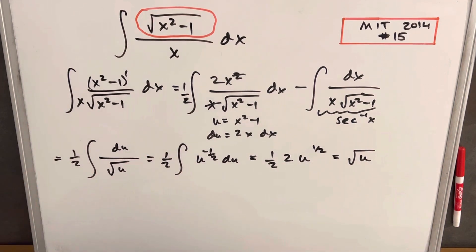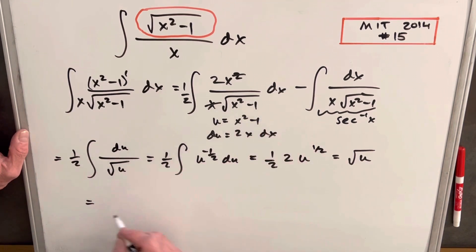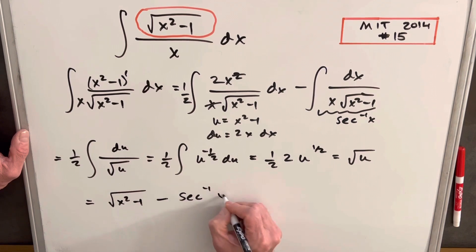So all that's left to do is put this together and finish it off. So we're going to have, for this first integral, square root of u. I'm going to back substitute with our u. So we're going to have square root of x squared minus 1 minus this integral, which is just secant inverse x plus c, and we're done.